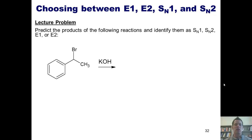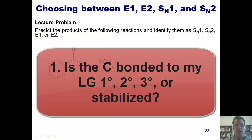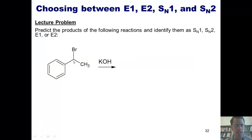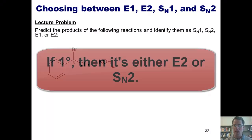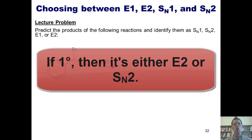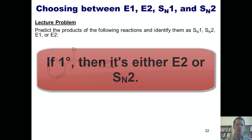When we look at the starting material and the given reactants, we go through a series of questions. First, we look at our starting material and determine if the carbon attached to our leaving group — in this case a bromine — is primary, secondary, tertiary, or stabilized. Remember that if it's primary, the only reaction it can proceed through is either E2 or SN2.